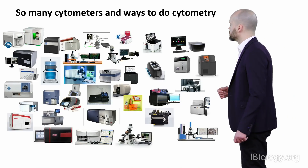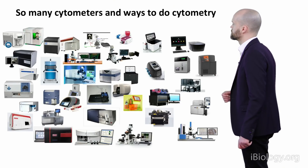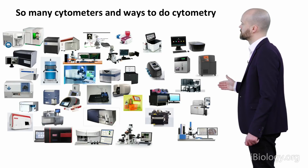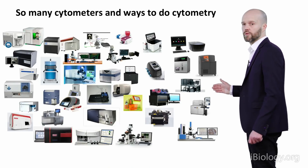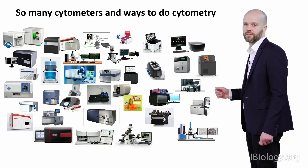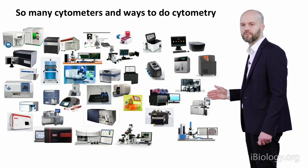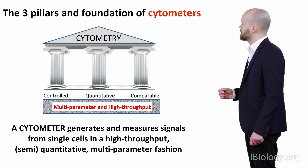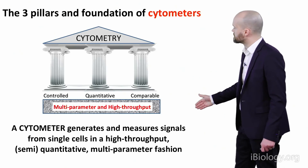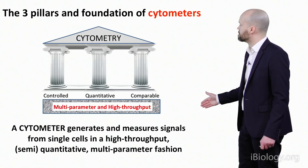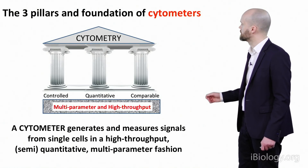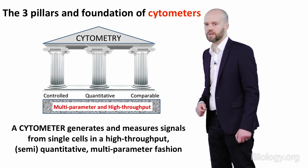To do cytometry, we need a specialized measurement device called a cytometer. There are many different types of cytometers and many different ways of doing cytometry, but they still follow the three principles introduced. A cytometer is a specialized instrument which generates and measures signals from single cells, often in a high-throughput manner, using semi-quantitative measurement capabilities, and often in a multi-parameter fashion.